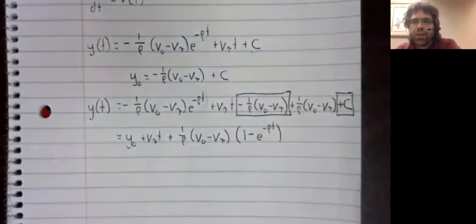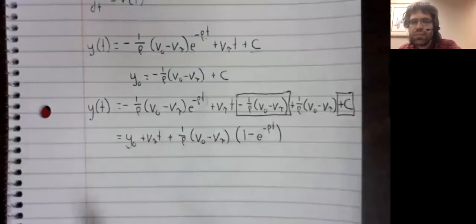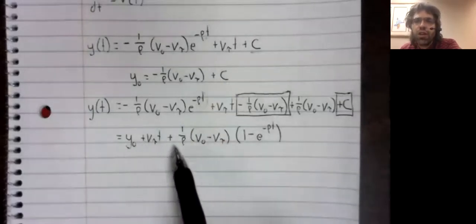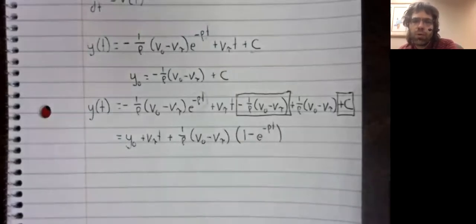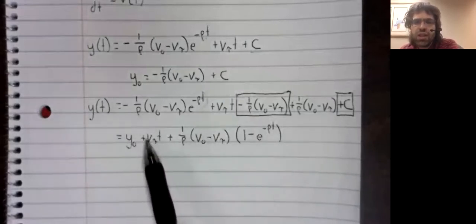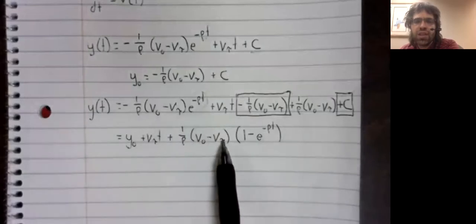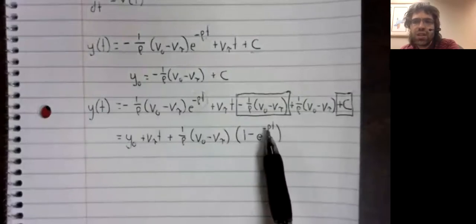And there is our position function. And we got rid of this C so that every constant in this equation has a concrete real world meaning. Initial height, terminal velocity, a measure of air resistance, initial velocity, terminal velocity again, and a measure of air resistance again.